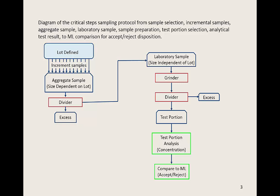The test portion is then extracted and analyzed for the mycotoxin in question. The resulting concentration should be compared to the maximum level to accept or reject the lot. The steps shown here produce a representative laboratory sample, a representative test portion, and a representative analysis of the test portion. However, the natural variability is not eliminated by representative sampling, and we know that most of the variability comes from sampling and sample preparation. A small portion of the variability is due to the analytical step.